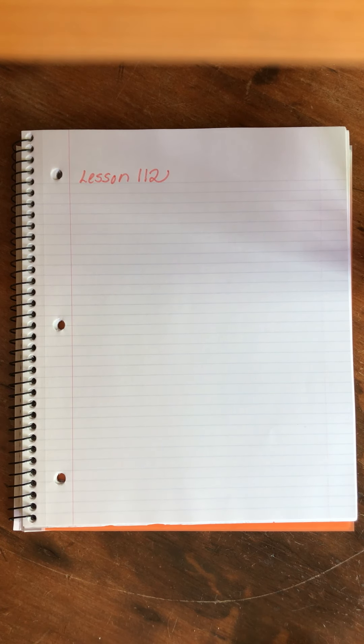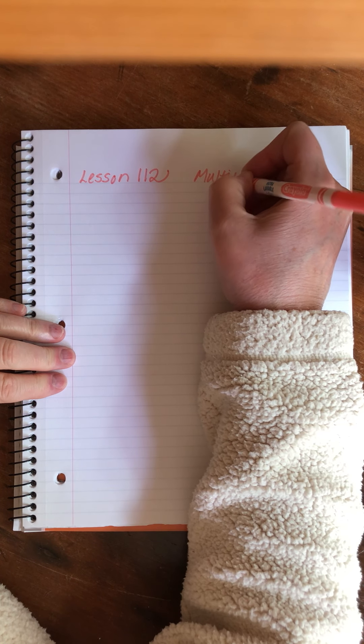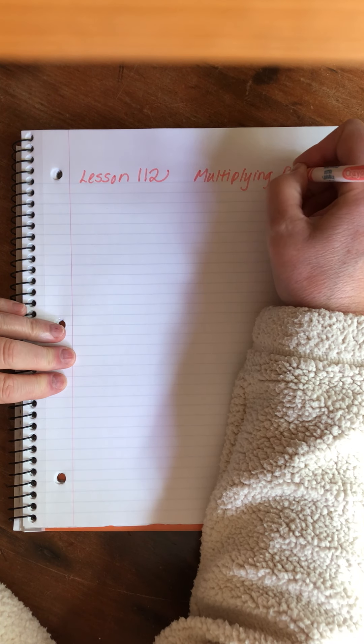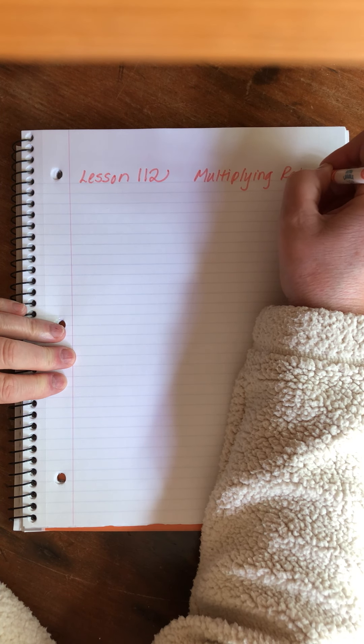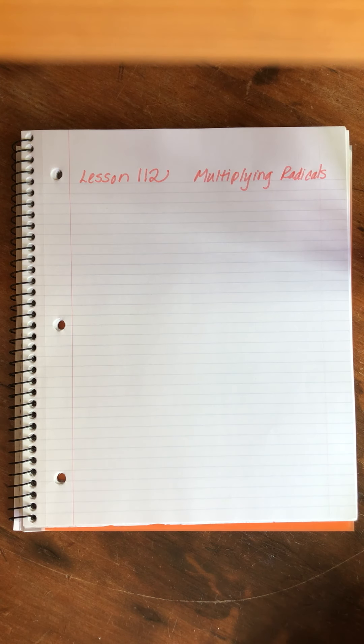Saxon Algebra 1 Lesson 112, we're going to talk a little bit more on multiplying radicals. Yes, those radicals - the ones that sit on the university granite steps with their bullhorns and call out to the crowd that it's time to stop the war. Those radicals, only a different kind of problem.